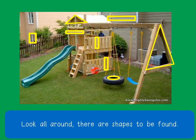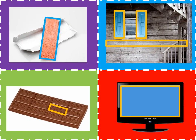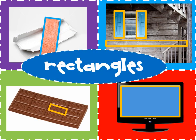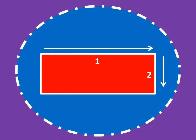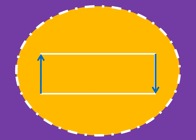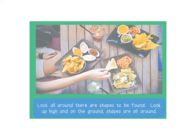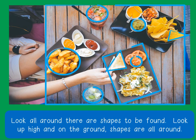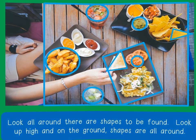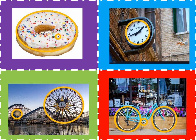Look all around. There are shapes to be found. These are hexagons. Look all around. There are shapes to be found. Look up high and on the ground. Shapes are all around.